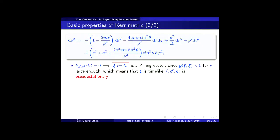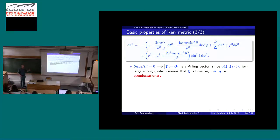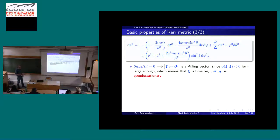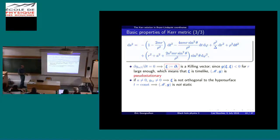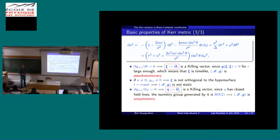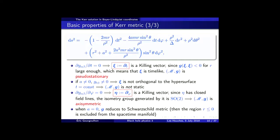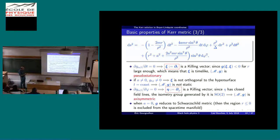This line element reduces to Schwarzschild in Schwarzschild-Ross coordinates. We noticed two symmetries in the spacetime: one we may call pseudo-stationary because the killing vector is time-like far from sufficiently large r. It was only stationary, not static, because the killing vector is not orthogonal to the hypersurfaces t equal constant. The second symmetry is axisymmetry. When parameter a is zero, we recover exactly the Schwarzschild metric.